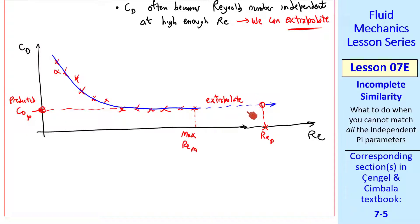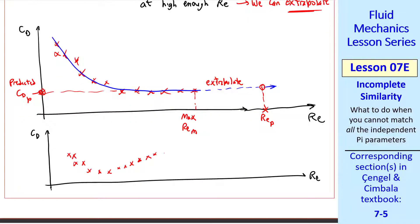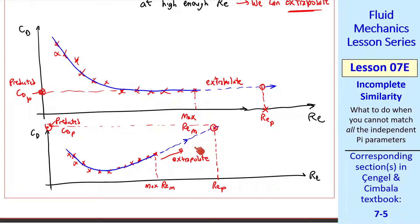Of course, there's always some uncertainty when you extrapolate. We don't know if the data will start to go up or down. In a different test, you may have data that look like this, where we reach a minimum CD and then the data appear to increase at some constant slope. If this is our max Re_m and this is our Re_p, we can extrapolate to this point and predict a CD_p. Again, there's a lot of uncertainty because we don't know if the data will follow this same line when we extrapolate.